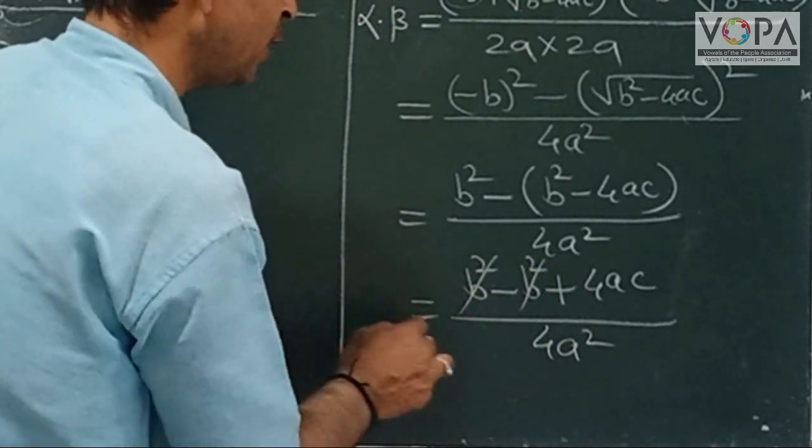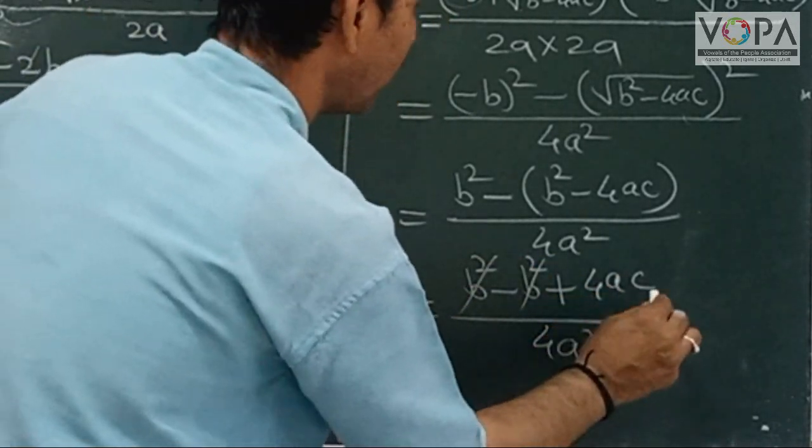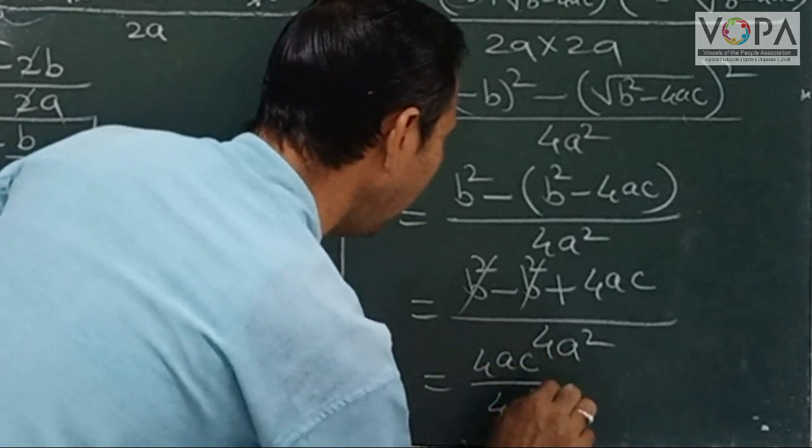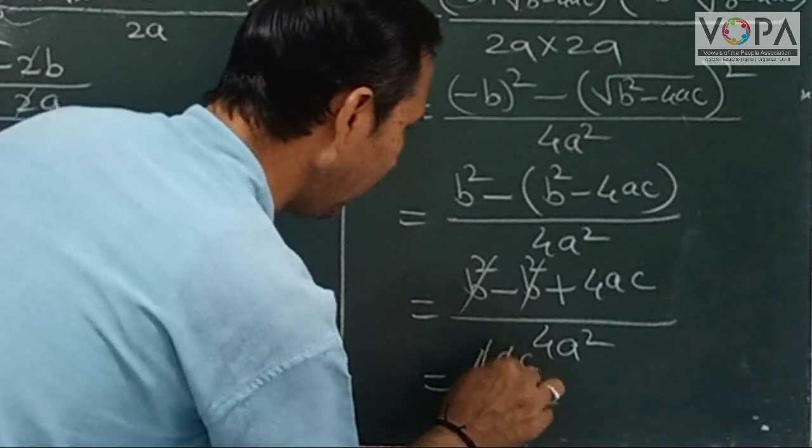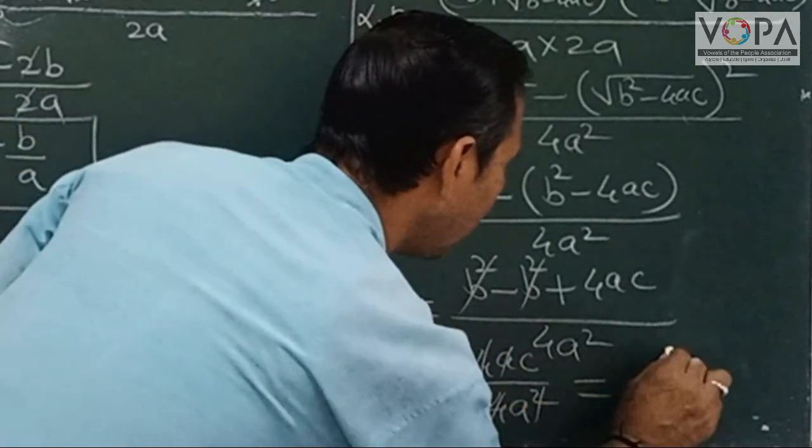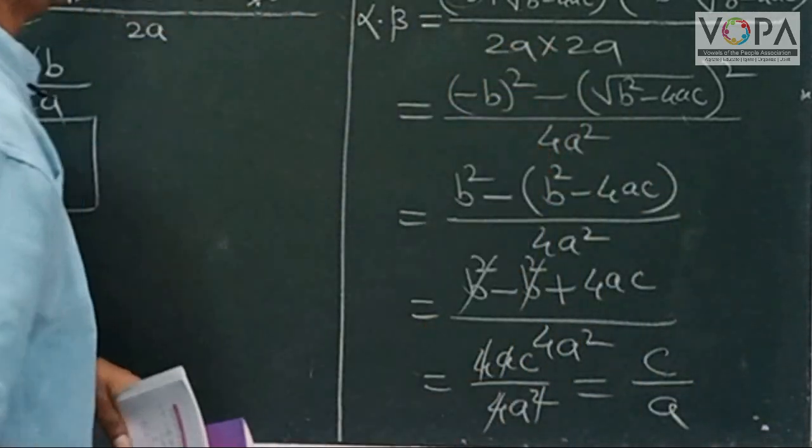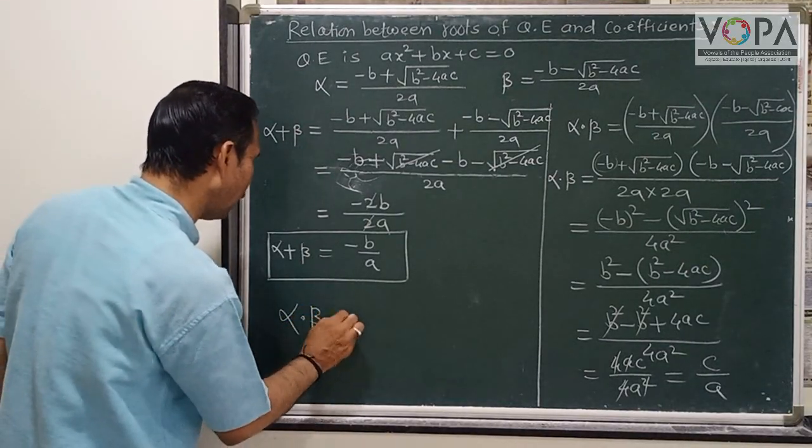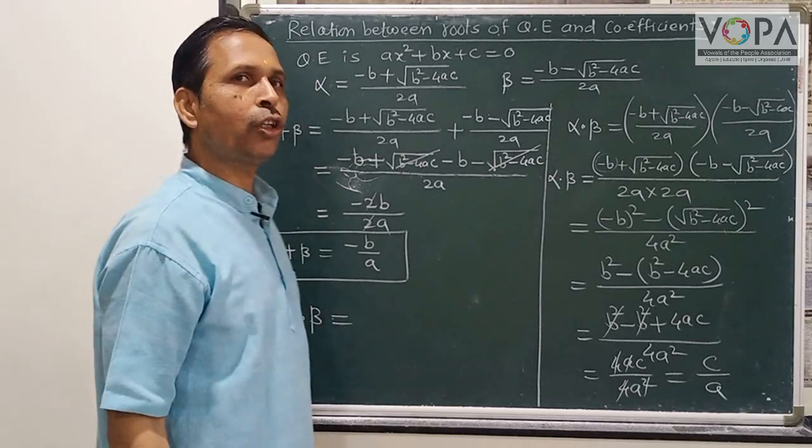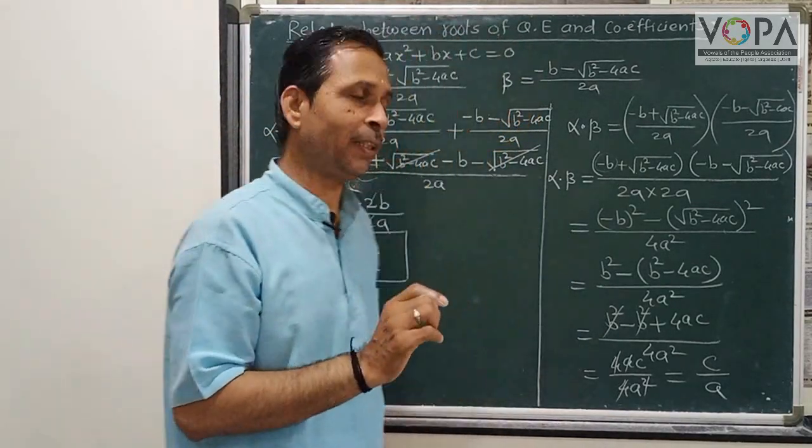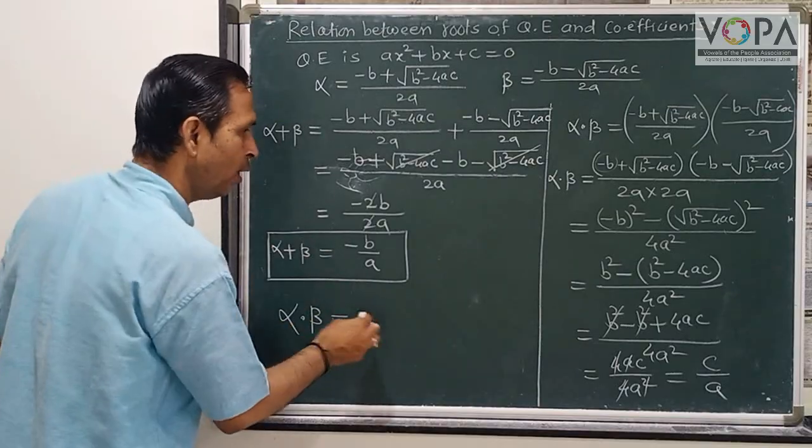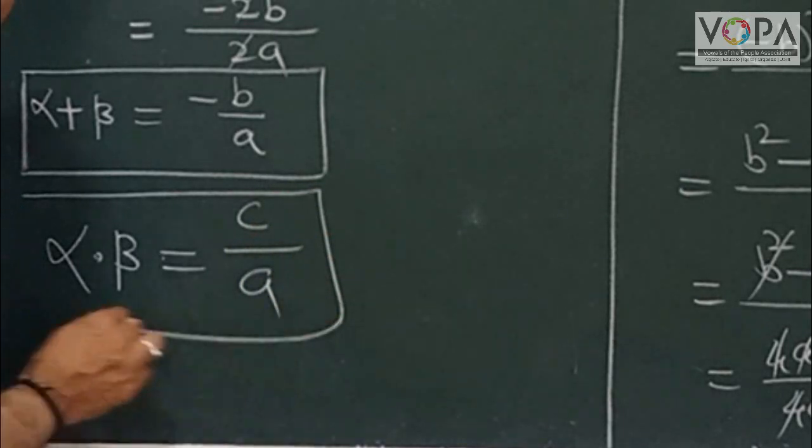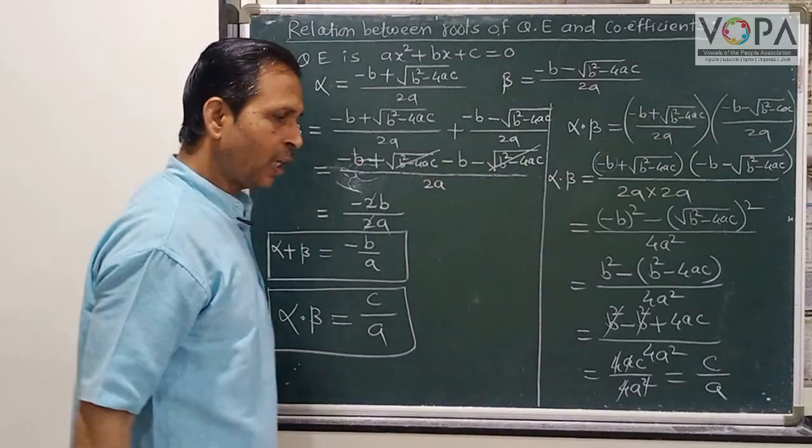Opening brackets: b² - b², and minus times minus gives plus 4ac, divided by 4a². The b² terms cancel. We get 4ac divided by 4a². The 4s cancel, one a cancels, leaving c/a. So α × β, the product of the roots, will always equal c/a. And these two formulas are extremely important. This is the relation between the roots of the quadratic equation and the coefficients of that quadratic equation.